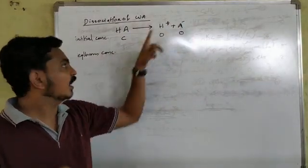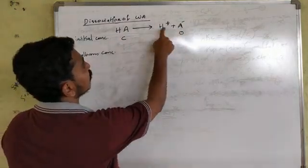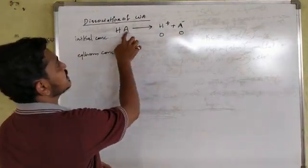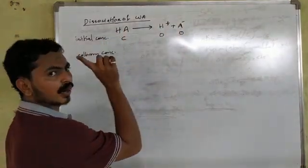In this stoichiometry question, HA is the initial concentration represented as C.